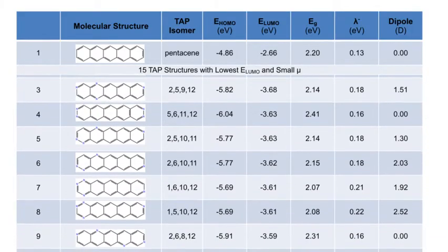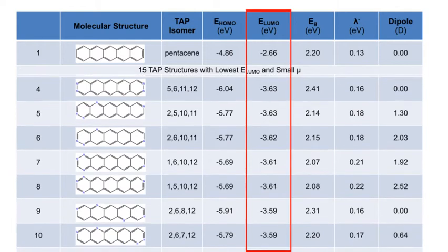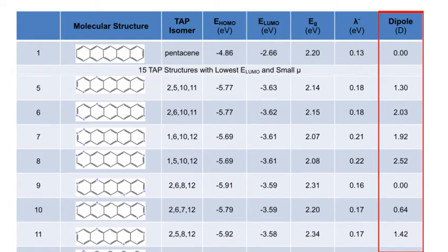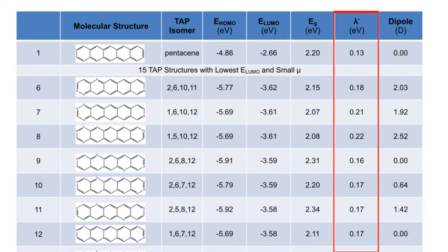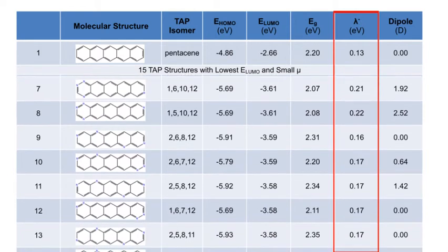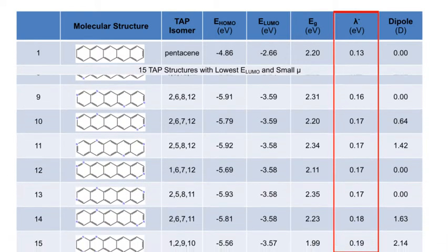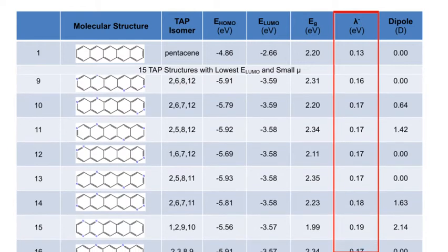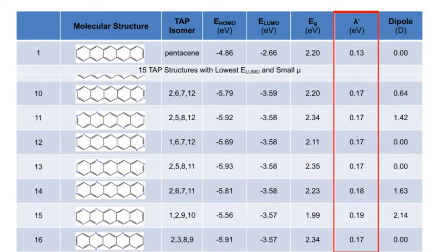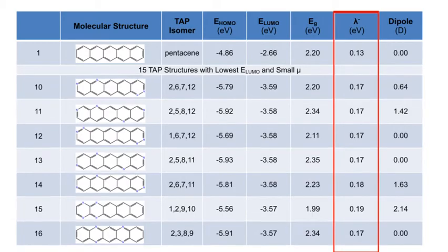15 exemplary tetraazapentacenes are shown here which have the lowest LUMO energies and low dipole moments, and all of which have computed electron transport reorganization energies less than 0.25 eV and comparable to that of pentacene, suggesting that these structures should show efficient electron mobility when good electron coupling in the condensed phase is achieved.